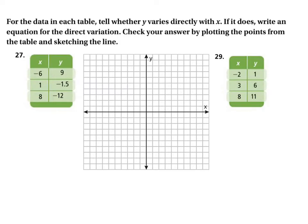For the data in each table, tell whether y varies directly with x. If it does, write a direct variation equation. We learned in class that you can find the k value — since the equation is y equals kx — by solving for k.